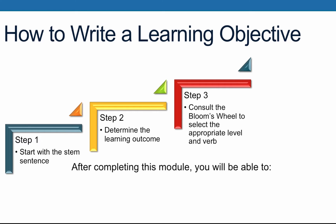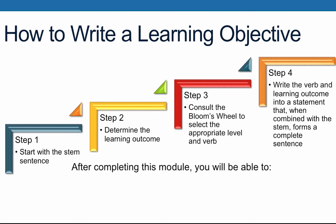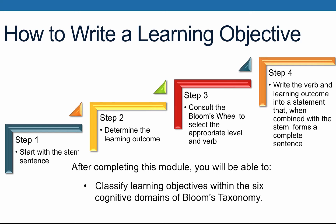We are now ready to move on to step four: write out the actual learning objective. 'Classify learning objectives within the six cognitive domains of Bloom's Taxonomy.' We now have a student-centered measurable learning objective that we can later use to design an activity, assessment, and related teaching strategies. For example, I could develop a learning objective classification activity that participants would complete after viewing this presentation. After this, I'm ready to move on to designing my next objective for this module using the same process.